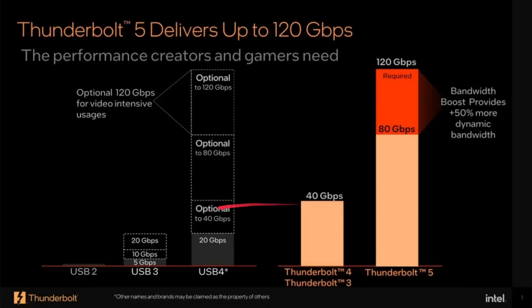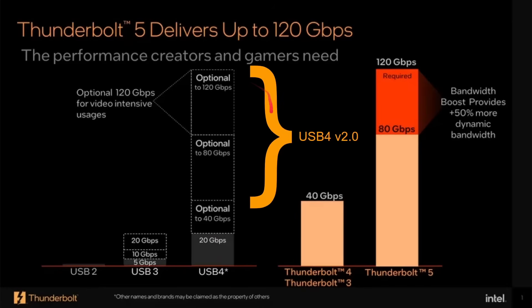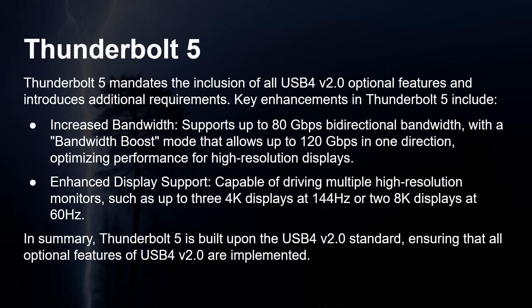Here's a quick diagram showing USB 2, USB 3 — with its various versions including 3.1, 3.2, Gen 1, and Gen 2 — through to USB 4. A lot of USB 3 and USB 4 features are optional, and the 80 gigabits in v2 is optional too. But with Thunderbolt 3 and 4 you had a mandatory 40 gigabits, and now with Thunderbolt 5 you must have 80 gigabits plus the 120 gigabits for video. In summary, Thunderbolt 5 is basically USB 4 but with everything optional made mandatory.